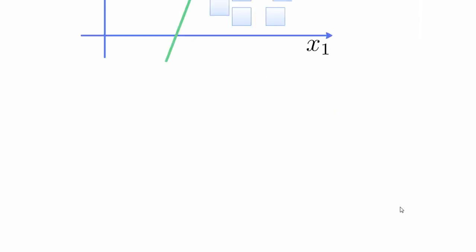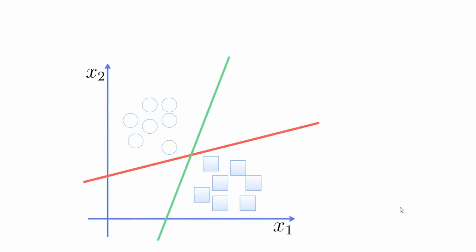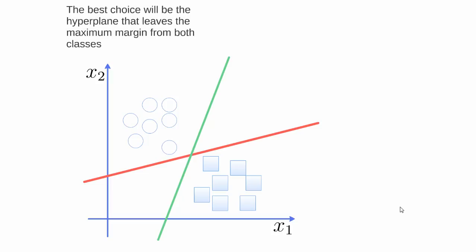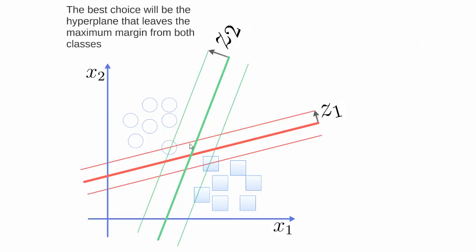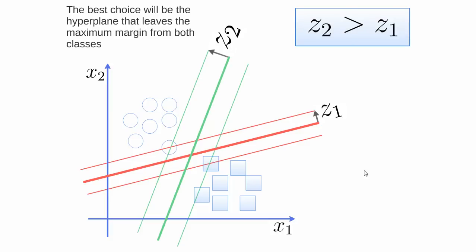Here we show two different hyperplanes which can correctly classify all instances in this feature set, but the best choice will be the hyperplane that leaves the maximum margin from both classes. The margin is the distance between the hyperplane and the closest elements. In the case of the red hyperplane, this distance is represented by Z1, and in the case of the green hyperplane, the margin is Z2. We can clearly see that Z2 is greater than Z1, so the margin is higher for the green hyperplane.